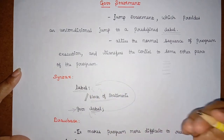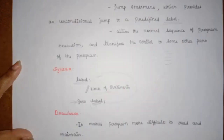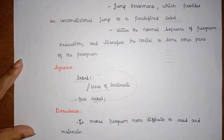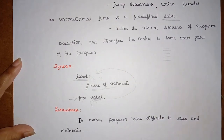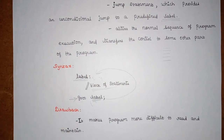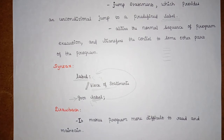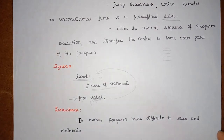If I show you an example, you will clearly understand how the goto statement works and how control moves from one part to another. Coming to the drawback of goto statement: the major drawback is it makes the program more difficult to read and maintain. When we use a large number of goto statements, it becomes very difficult to read the program, understand where the goto is, and how execution is happening. That makes it difficult to maintain and understand the code.